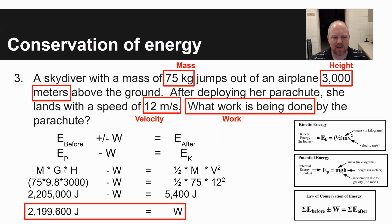And so your mass times gravity times height before minus work that you're solving for, since you are being slowed down due to friction, air resistance with that parachute, is equal to one-half times mass times velocity squared afterwards.